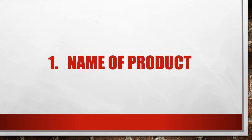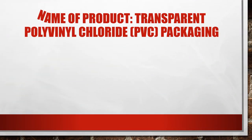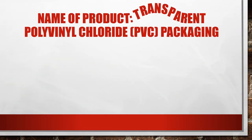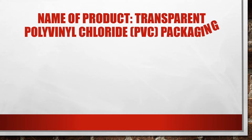Number one: Name of the product. The name of the product is the transparent polyvinyl chloride, PVC, packaging. Here are the examples of PVC packaging.